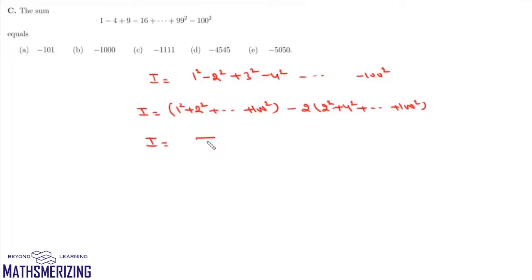We can write this as summation r square where r varies from 1 to 100, and then minus here we'll take 2 square common so it will be 8, and then we'll have this summation which is r varies from 1 to 50 and then summation r square.